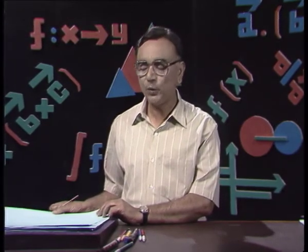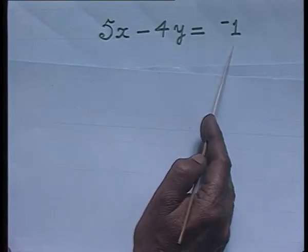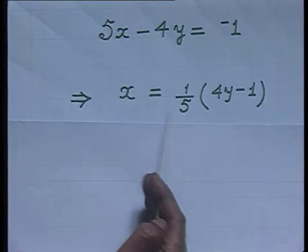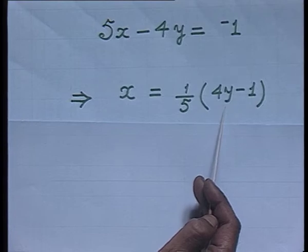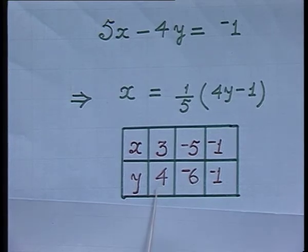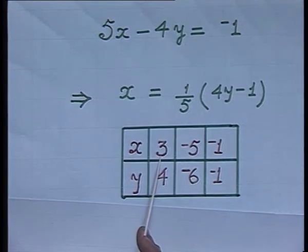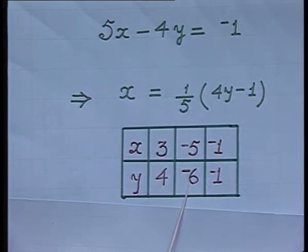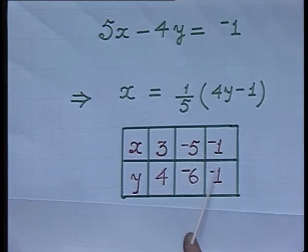Let us have a look at the equation: 5x minus 4y equals minus 1. Here I am making x as a subject and I get x equals one-fifth times (4y minus 1). By assigning any values to y, I can get the values of x. When y equals 4, x equals 3, giving ordered pair (3, 4). When y equals minus 6, x equals minus 5, and another ordered pair is (minus 1, minus 1).